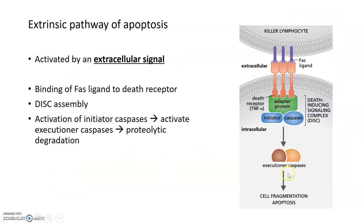In the extrinsic pathway of apoptosis, in order to activate pro-caspases there has to be a signal for the cell to die. In the extrinsic pathway, that signal comes from outside the cell. A killer lymphocyte — an immune cell — will express a ligand called FasL (Fas ligand), which can bind to Fas receptors. These are transmembrane receptors more commonly known as death receptors, present in the cell membrane of the cell undergoing apoptosis.